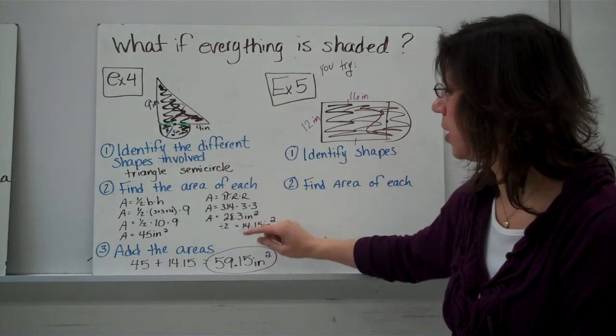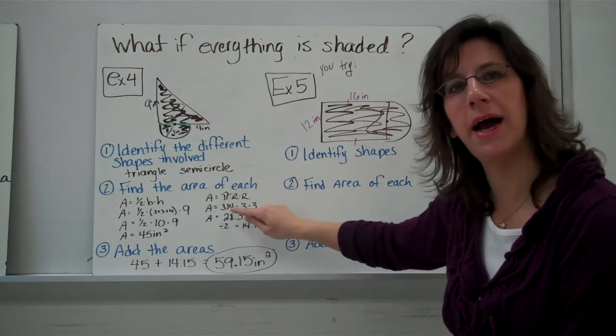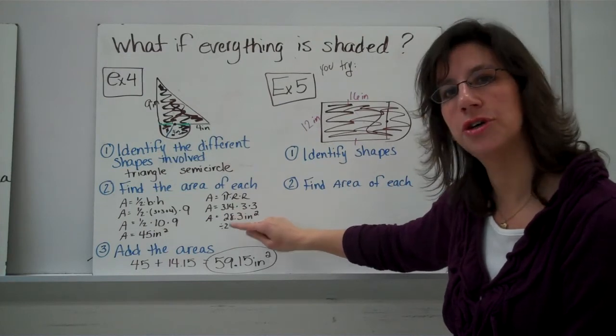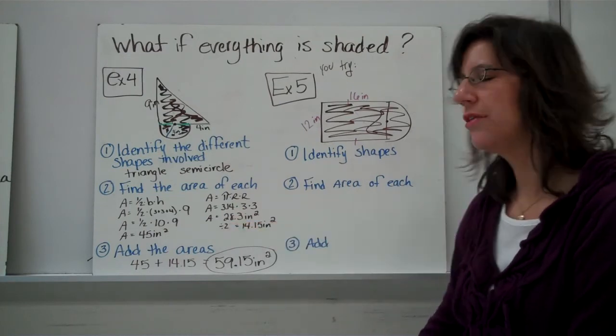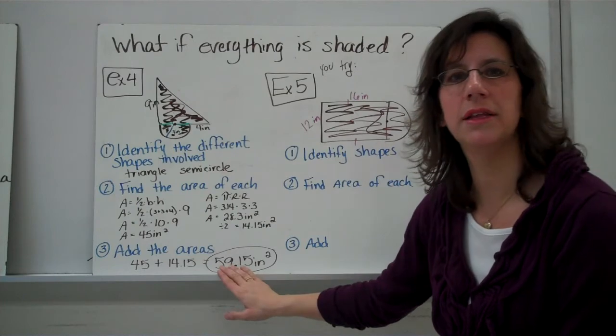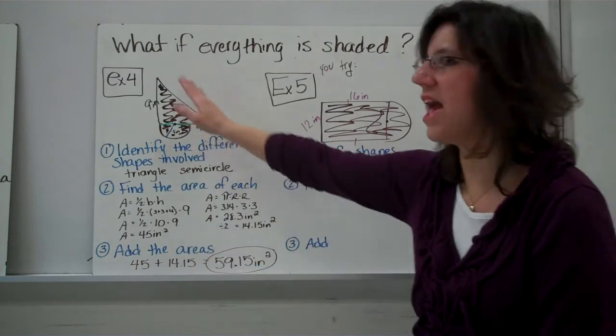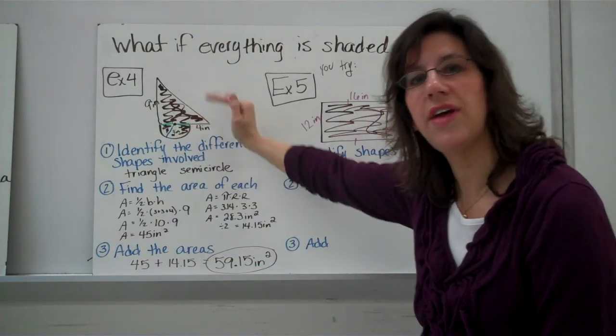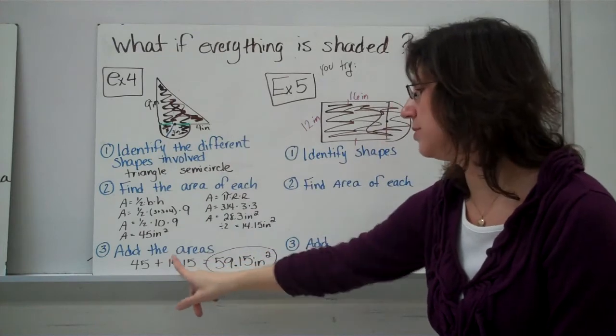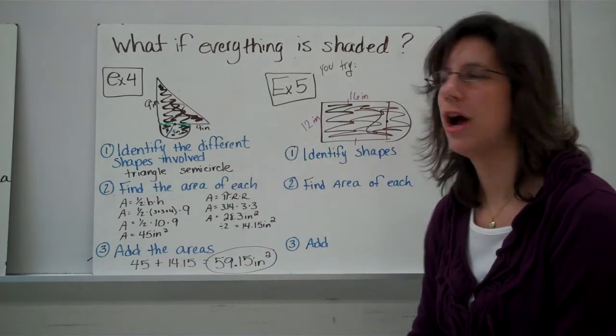Alright? And then, for the circle part, we've got 3 times 3 times pi. And then, don't forget, that's the area of the entire circle, so you divide it by 2. Now, the only difference between this example and the last couple of examples is, here, everything is shaded. If everything is shaded, you're going to add those final areas together.